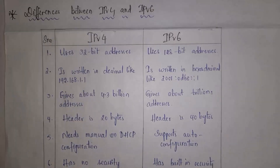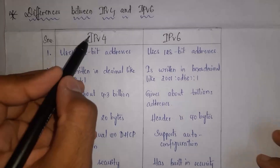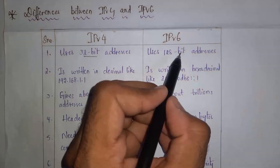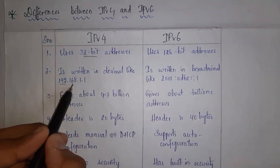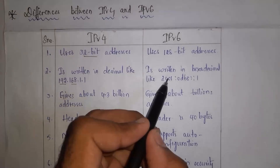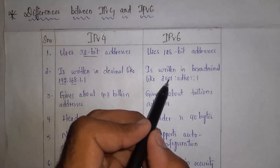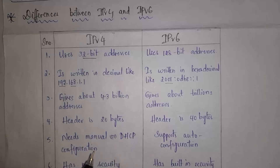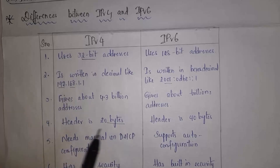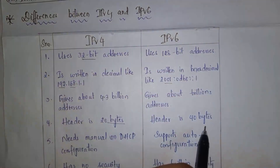Now I will explain the differences between IPv4 and IPv6. The size of an IPv4 address is 32 bits and the size of an IPv6 address is 128 bits. IPv4 is written in decimal, like 192.168.1.1, whereas IPv6 is written in hexadecimal. IPv4 supports up to 4.3 billion devices, whereas IPv6 supports more than trillions of devices. In IPv4, the header size is 20 bytes, and in IPv6, the header size is 40 bytes.